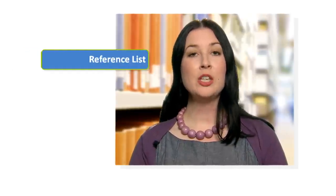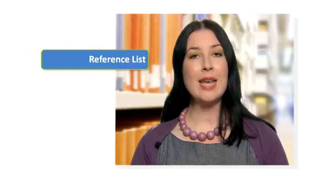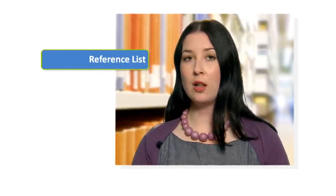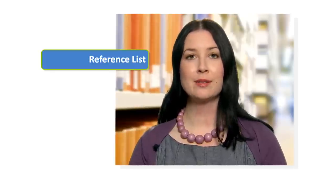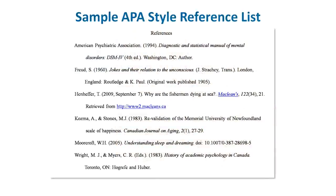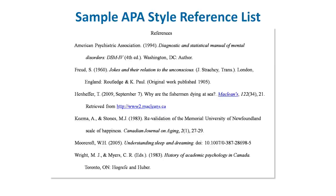At the end of your paper, you should have a reference list containing full citations for all of the sources you quoted or referred to in your paper. Like the rest of your paper, your reference list should be double-spaced with one-inch margins using 12-point Times New Roman font. Do not put references in larger, colored, bold, or italicized font. References should all be in alphabetical order by author's last name. The first line of each reference is flush left and additional lines are indented.